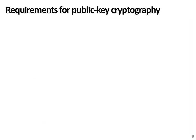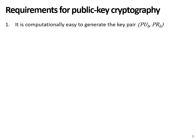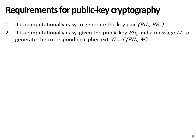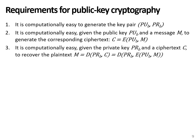Before I finish this video, let's take a look at the requirements of public key cryptography algorithms. I'll describe these requirements from the point of view of encryption — when used for authentication, the use of the public and private key is basically inverted. The first requirement is that it should be computationally easy to generate a key pair consisting of a public and a private key. The second requirement is that it should also be computationally easy, given a public key and a message M, to generate the corresponding ciphertext. Third, it should be computationally easy, given the private key and the ciphertext, to recover the plain text to enable decryption.